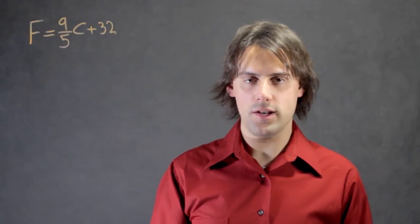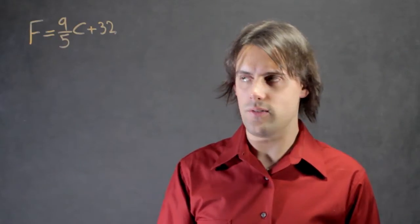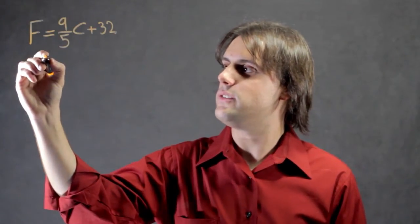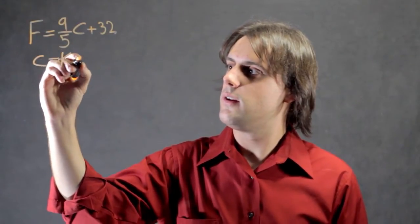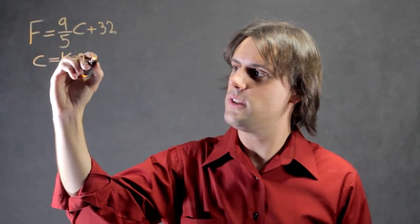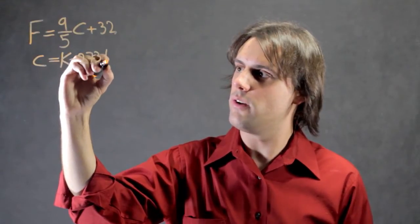We also need to know the relationship between Celsius and Kelvin, and that's given by this equation. Degrees Celsius is equal to degrees Kelvin minus two hundred seventy three point one five degrees.